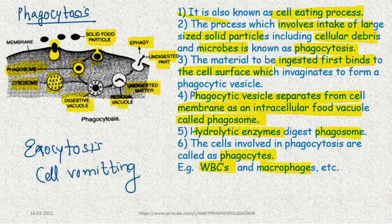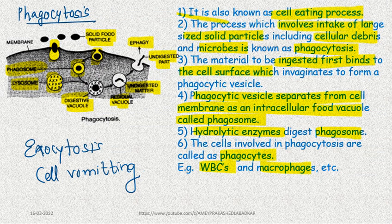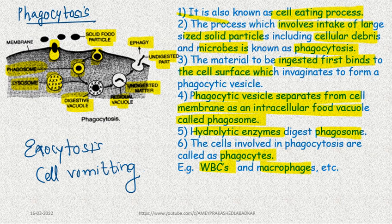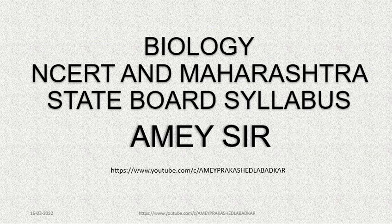This is the important part regarding functions and transport carried out by the plasma membrane. We have covered cell wall and plasma membrane. Next in this chapter we will study cytoplasm, which has three components: cytoplasmic matrix, cell organelles, and cell inclusions. Separate videos will be made for each organelle. Thanks for watching — keep studying and use your time correctly. Thank you very much.